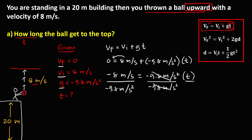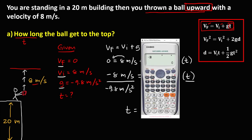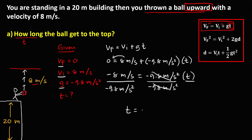After canceling, the time equals −8 divided by −9.8, which gives 0.82 seconds. So the time for the ball to reach the top is 0.82 seconds. The meter and one second units cancel appropriately.